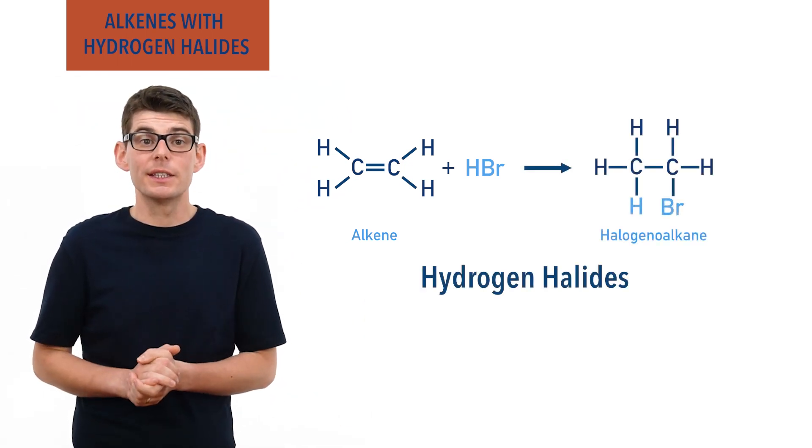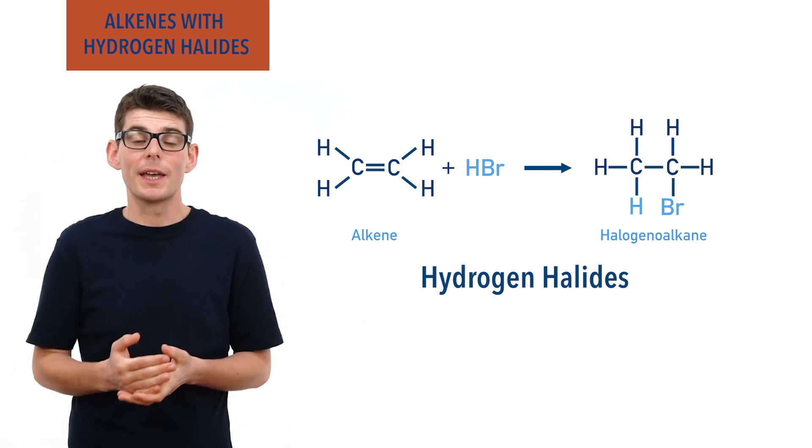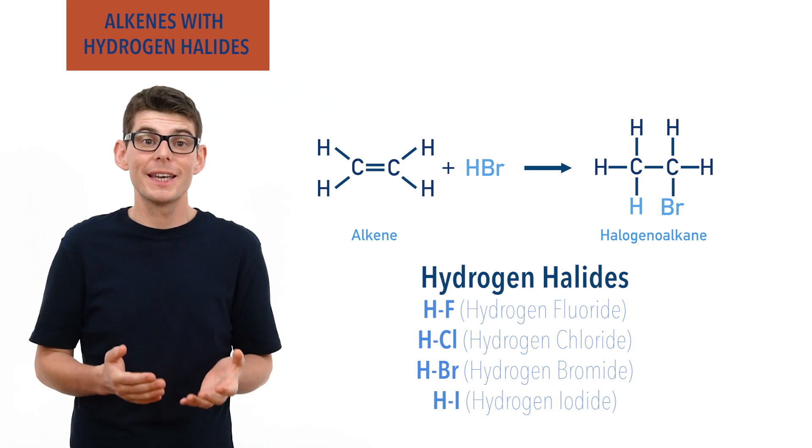A hydrogen halide is a molecule made up of a hydrogen atom bonded to a halogen atom: fluorine, chlorine, bromine, or iodine.